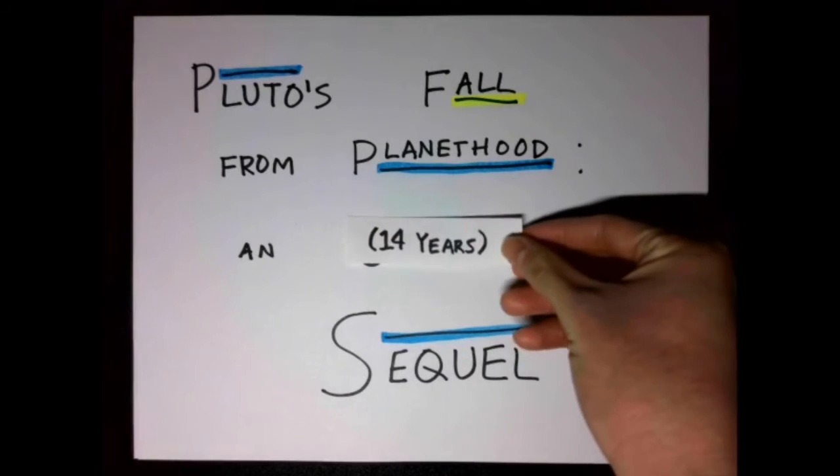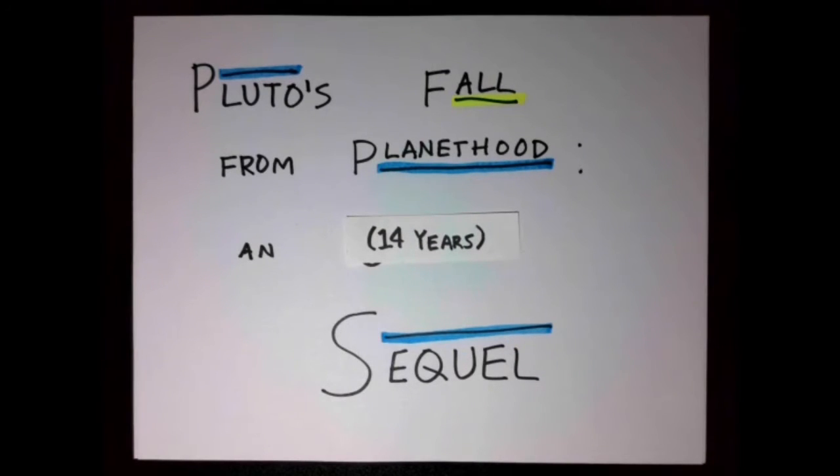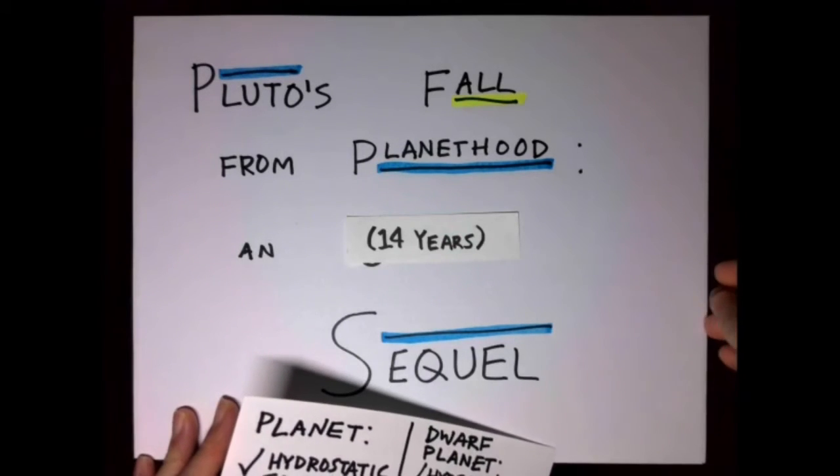A long, long time ago, in a galaxy that's precisely this one, the scientists of Earth agreed to banish Pluto to the realm of the dwarf planets. You've probably heard the explanation as to why already, so I'll just summarize with the definitions of planet and dwarf planet that these scientists came up with.